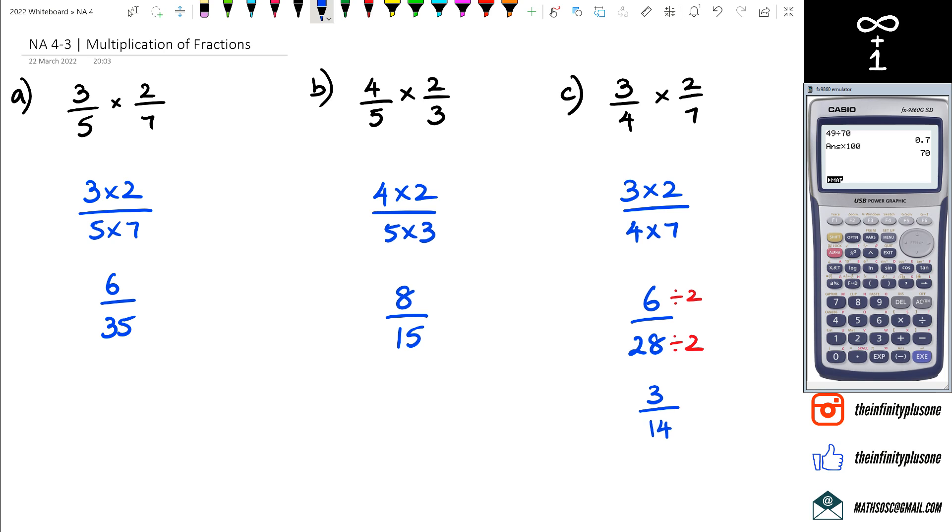Now if you look at it in the calculator, and I'm particularly looking at the second question there, if I go three quarters multiplied by two sevenths in the calculator, it always gives the simplified version of the answer.